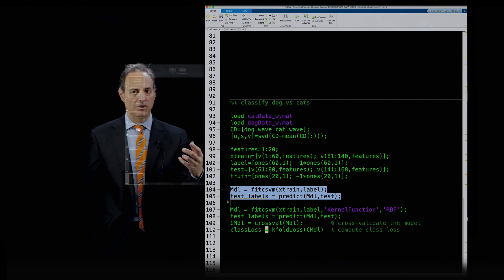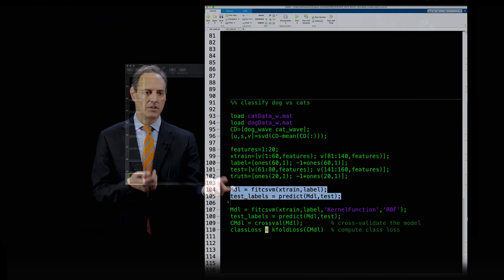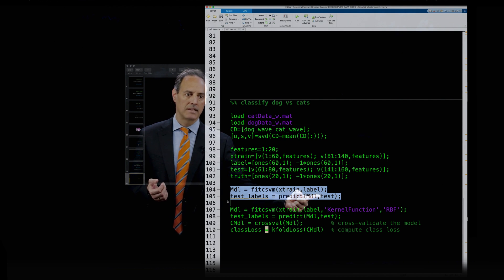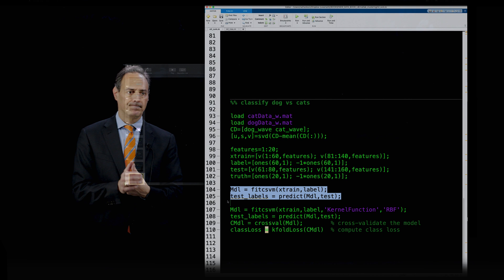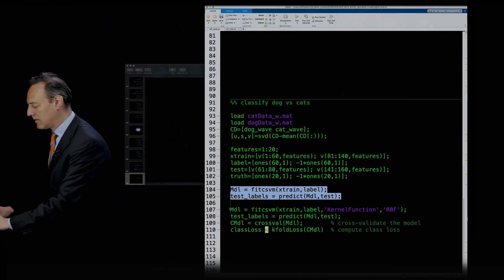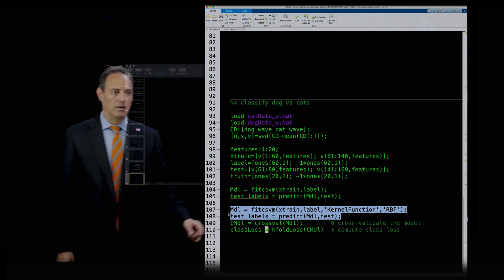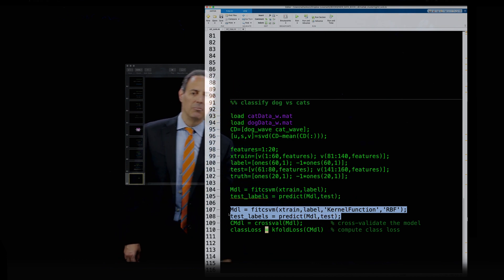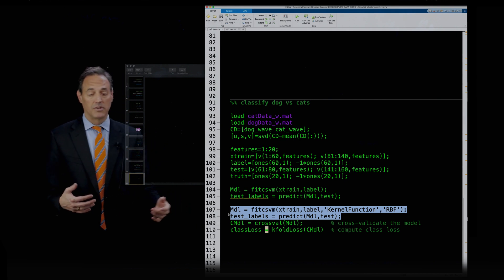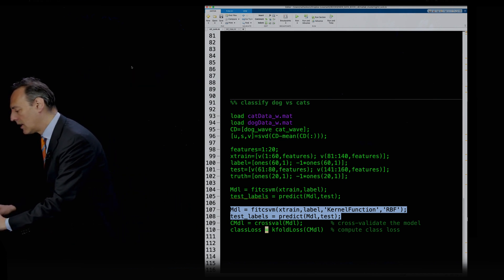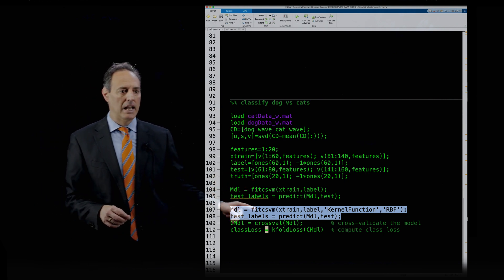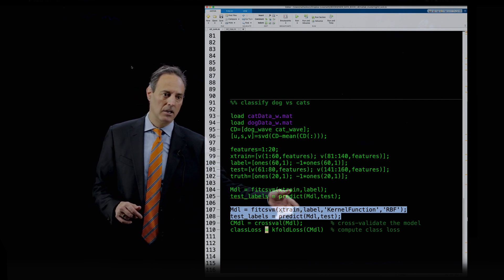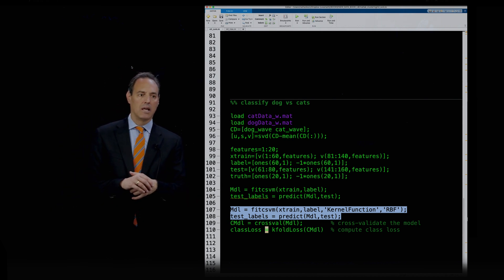If I want to see how well it works, I can use the predict command. Predict on the model. Now I can run the test set through and it's giving me the test labels. That's it. If you want to use one of the kernel tricks, all you got to do is fitcsvm with an option: kernel function, RBF, radial basis function. You can pick different basis functions there as you wish. This is a very powerful algorithm that allows you very quick access to kernel methods. You have this ability to very simply train on one of these very high-end methods.